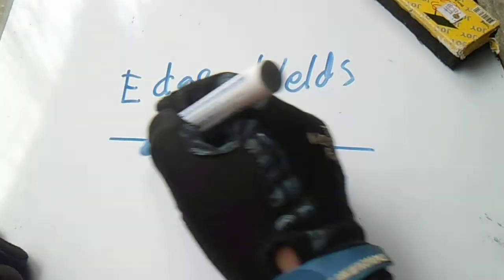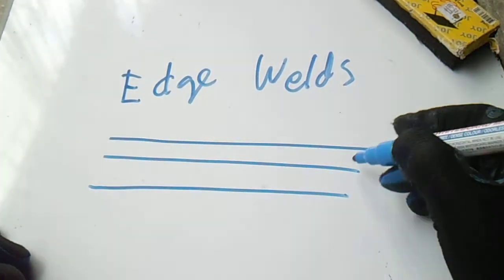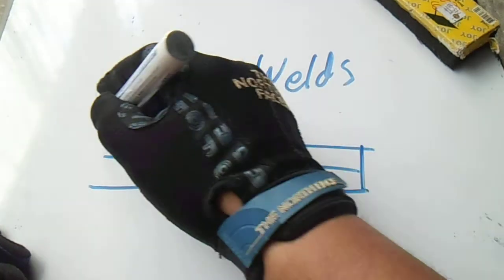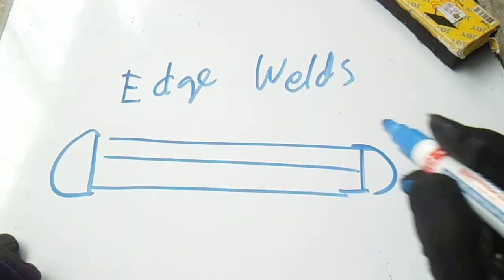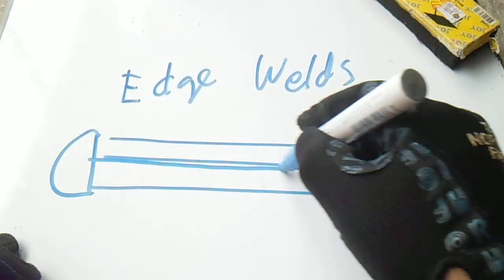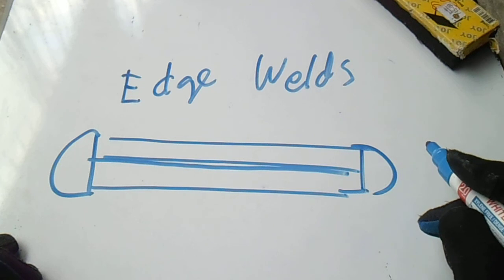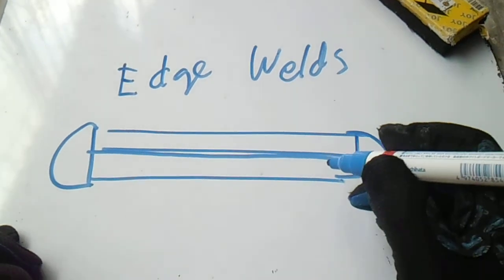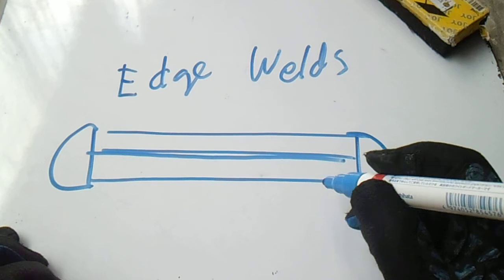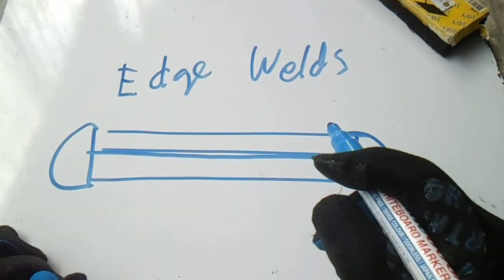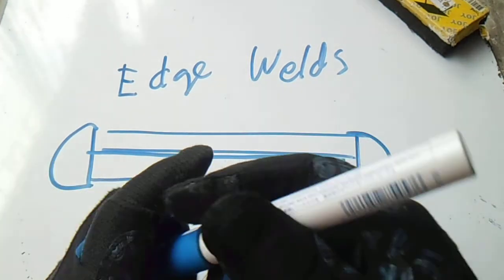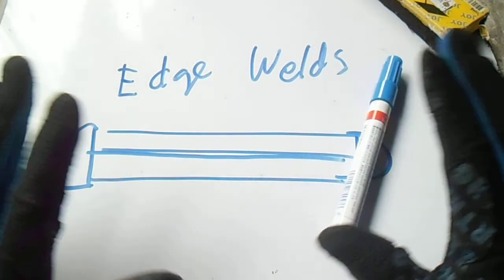Next, the last is edge welds. We have a welding from here. So we have five types of common welds: butt weld, fillet welds, spot welds, plug welds, and edge welds. Thanks for watching guys and have a nice day. Bye.